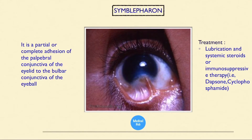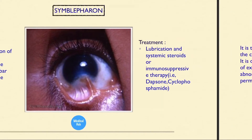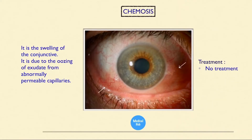The corneal involvement shows giant papillae repeatedly rubbing on the cornea. This is symblepharon — a partial or complete adhesion of the palpebral conjunctiva of the eyelid to the bulbar conjunctiva of the eyeball. Treatment is lubrication and systemic steroids or immunosuppressive therapy such as Dapsone and cyclophosphamide.